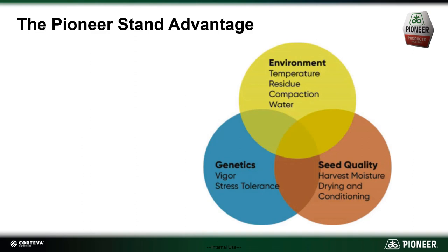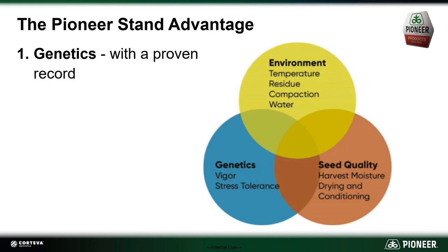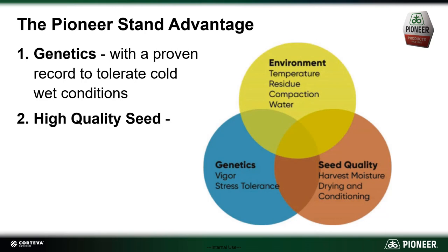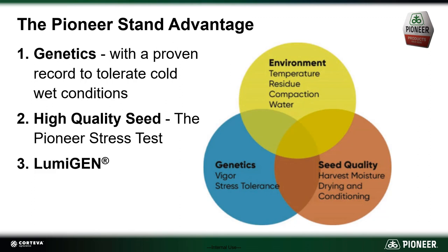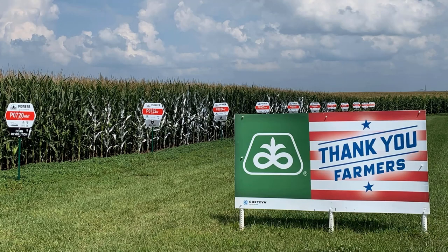Environment, genetics, and seed quality are going to determine your stands, and Pioneer has a real stand advantage. The reason for that is we've been in the business for over 95 years. Our genetics have a proven record to tolerate cold, wet conditions. We have high quality seed that's screened by the Pioneer stress test, and we use a Lumogen seed treatment package with an excellent fungicide mix and different modes of action to keep that seed safe out in the field.